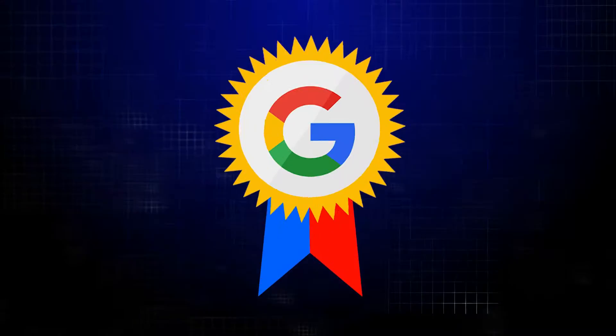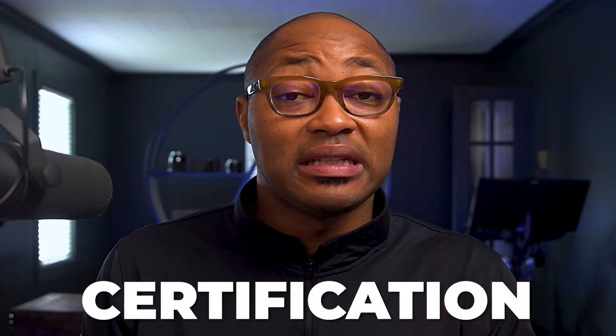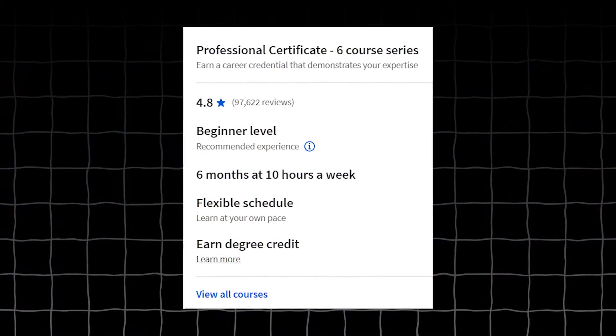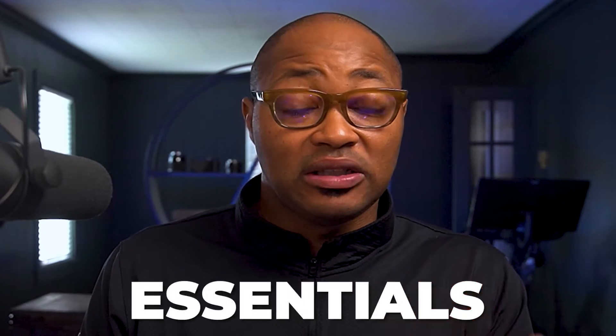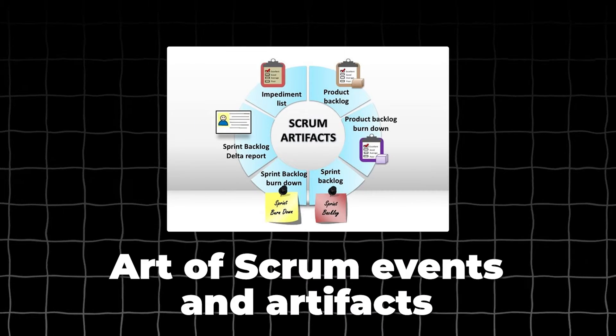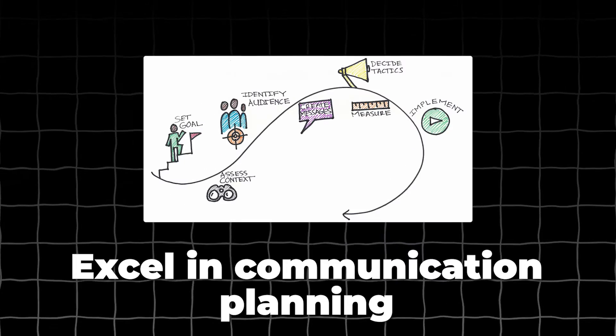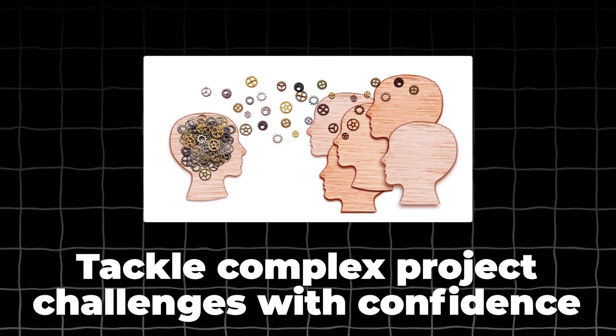Coming in at number three is the Google Project Management Certification. If you have an interest in project management, this prestigious certification sits among Google's top three certifications in the field. The program takes on average around six months and equips you with project management essentials — you will dive deep into agile methodologies, the art of scrum and artifacts, communication planning, stakeholder management, and tackling complex project challenges with confidence.